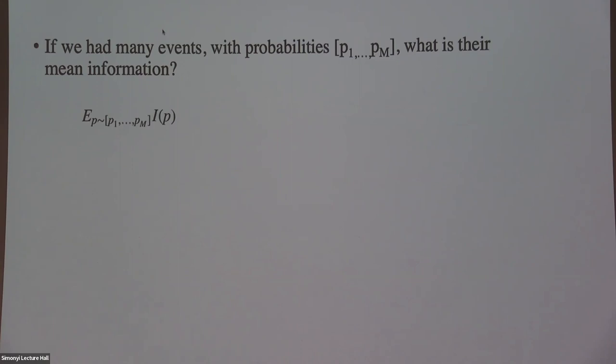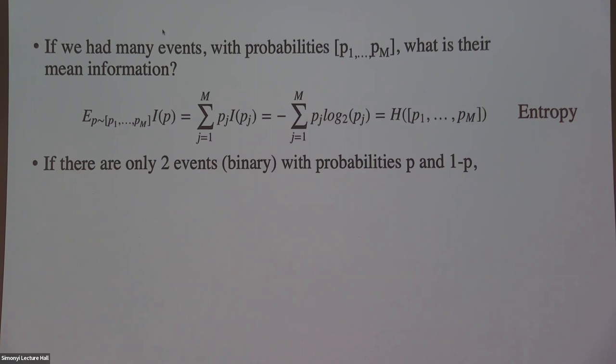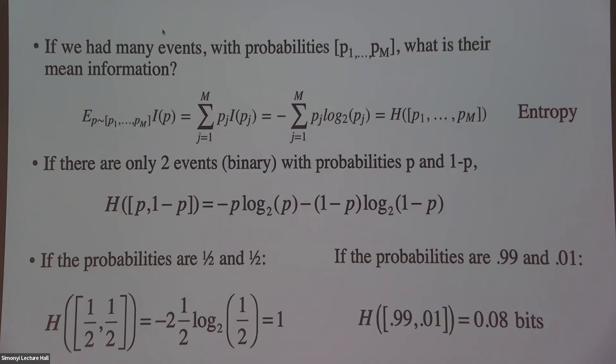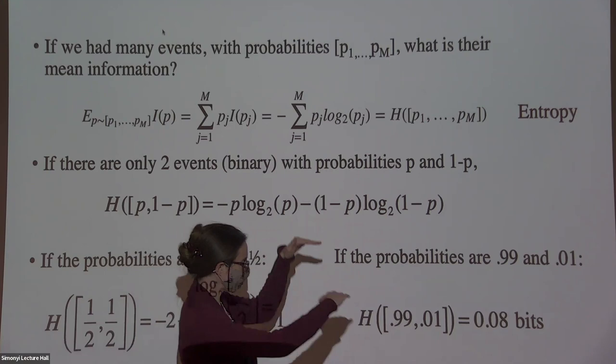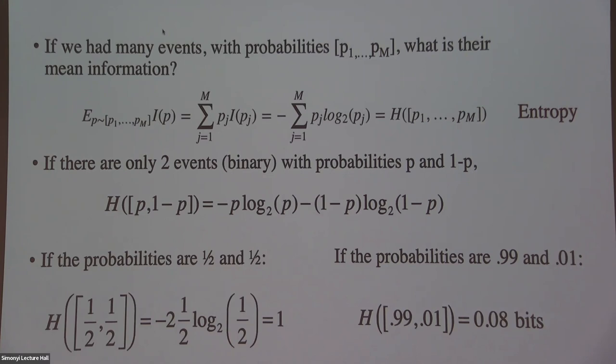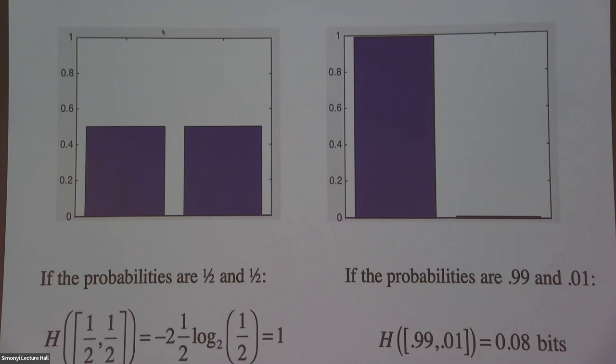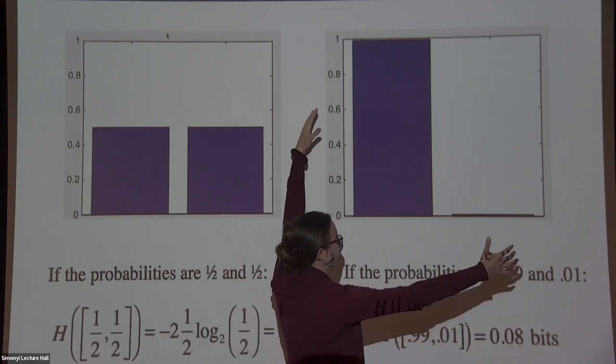If we have a whole lot of events, we can take the expectation of the information from those events — just the definition of expectation — plugging in the definition of information as negative log 2 of p, and that's called the entropy. If you have probabilities that are even, the entropy is around one; if the probabilities are very different from each other, the entropy is really small. Low entropy means things are gathered up, like a sand castle. High entropy — probability half-half — is like chaos, or the world's natural order.